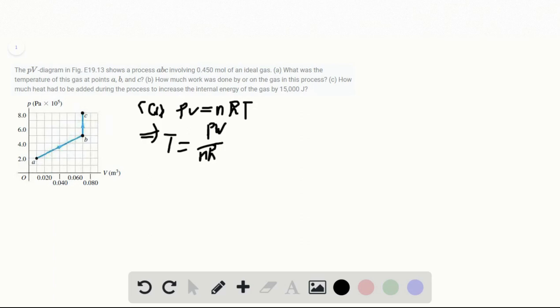I just gave the result here. So TA I found is 534.6 Kelvin. And TB is 9355 Kelvin. And TC is 14968 Kelvin. It's pretty high.